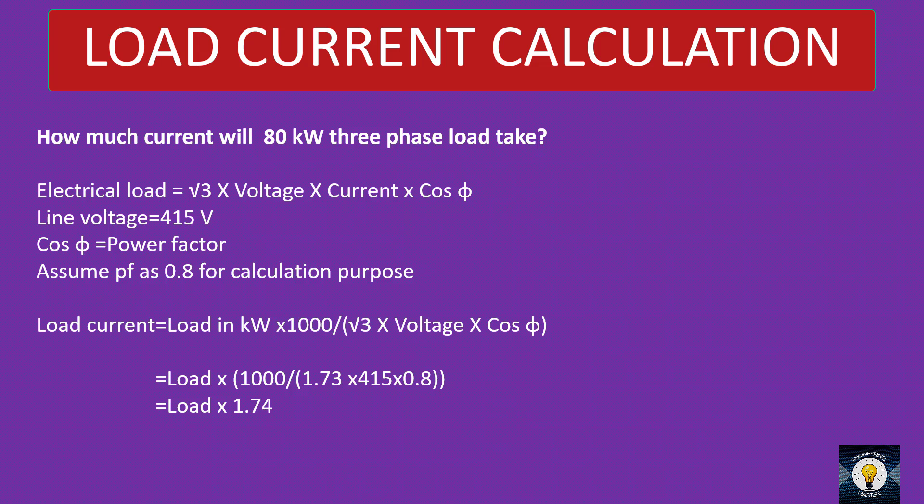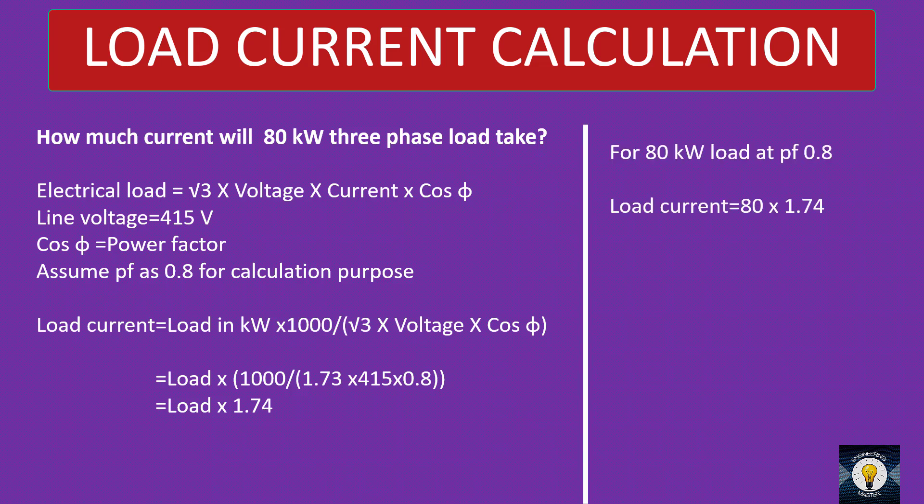If someone asks what is the current drawn by a 10 kW three-phase load, just multiply the load by 1.74 — that is 10 into 1.74, approximately 17.4 A. Now addressing our main question: for an 80 kW load at 0.8 power factor, load current equals 80 into 1.74, which gives 139.2 ampere. If your line voltage is 415 V, remember 1.74 for power factor 0.8 and just multiply the load in kW by 1.74 to get the load current.